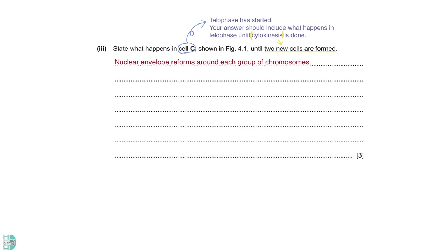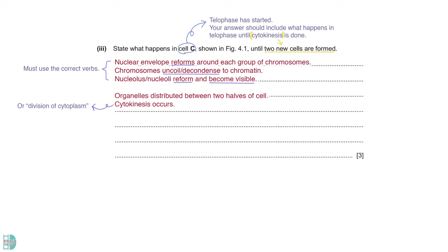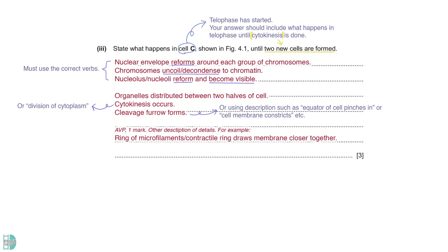Number 3, state what happens in cell C shown in Figure 4.1 until two new cells are formed. In C, you can see that telophase has already started. So in your answer, you must include what happens in telophase until cytokinesis is done. Firstly, the nuclear envelope reforms around each group of chromosomes. Then chromosomes uncoil or decondense to chromatin. The nucleolus reforms and becomes visible. For these points, pay attention to the verbs you use. You will lose marks if you use inappropriate verbs. Then the organelles are distributed between two halves of the cell. Cytokinesis will follow. Since this is an animal cell, cytokinesis occurs by cleavage furrow. Extra details such as the role of contractile ring during cytokinesis is credited as AVP.